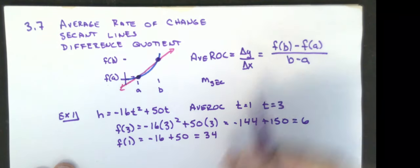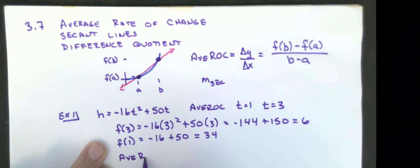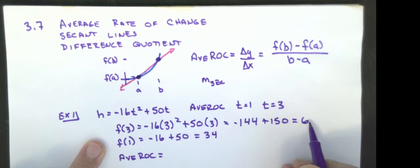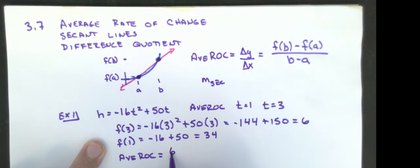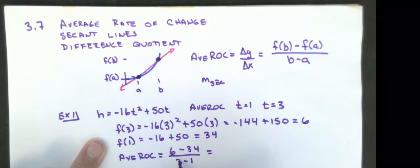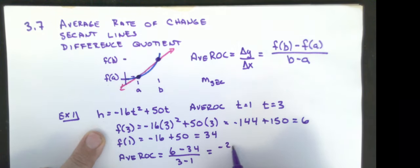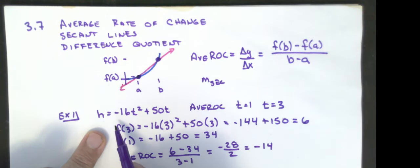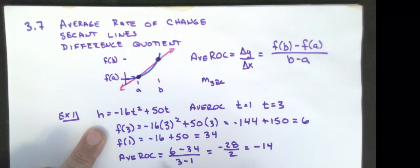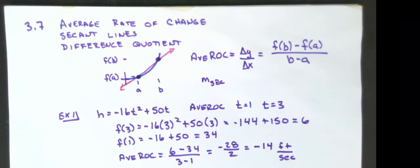So I have negative 16 times 9. That gives 150 minus 144, which is 6. My f of 1 is negative 16 plus 50, which is 34. So my average rate of change is f of 3 minus f of 1 over 3 minus 1, which is 6 minus 34 over 2. That's negative 28 over 2, which is negative 14. Since this is in feet and seconds, that's negative 14 feet per second — meaning it's going down at a rate of 14 feet per second on average.